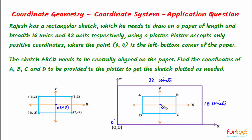If we can find the coordinates of O with respect to O dash, then very easily we can find the coordinates of A, B, C and D which will be given to the plotter. Based on this approach, let's complete the solution.